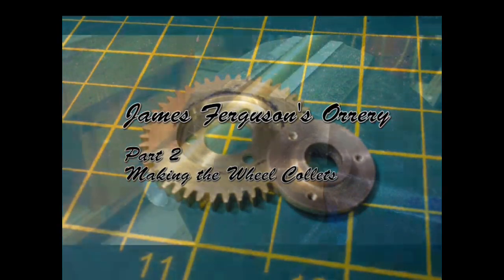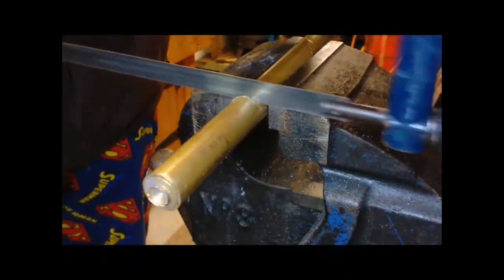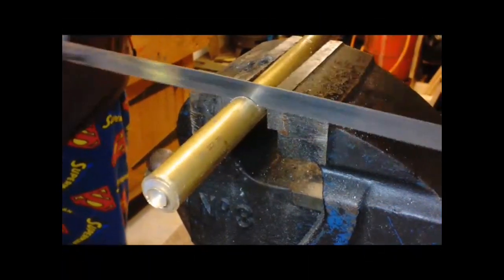Welcome back to part two of building James Ferguson's Orrery. In this part we're going to look at making the wheel collars.